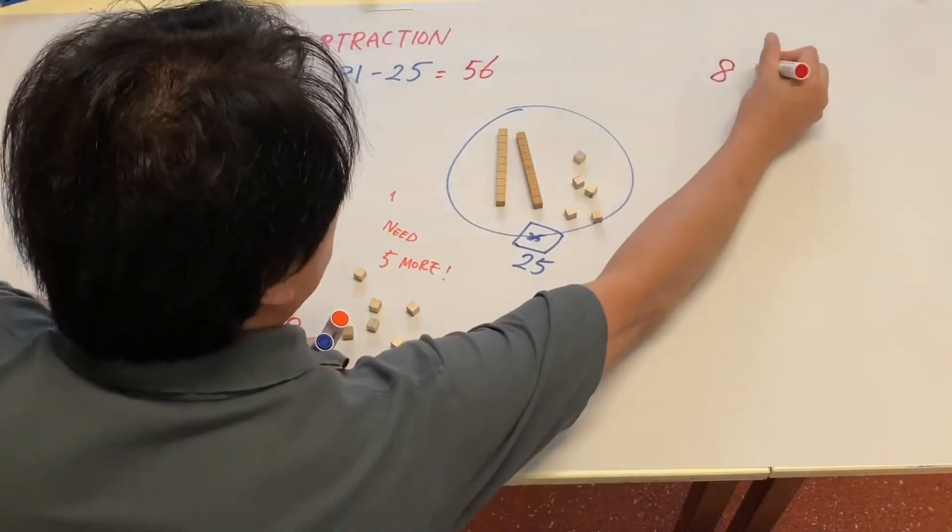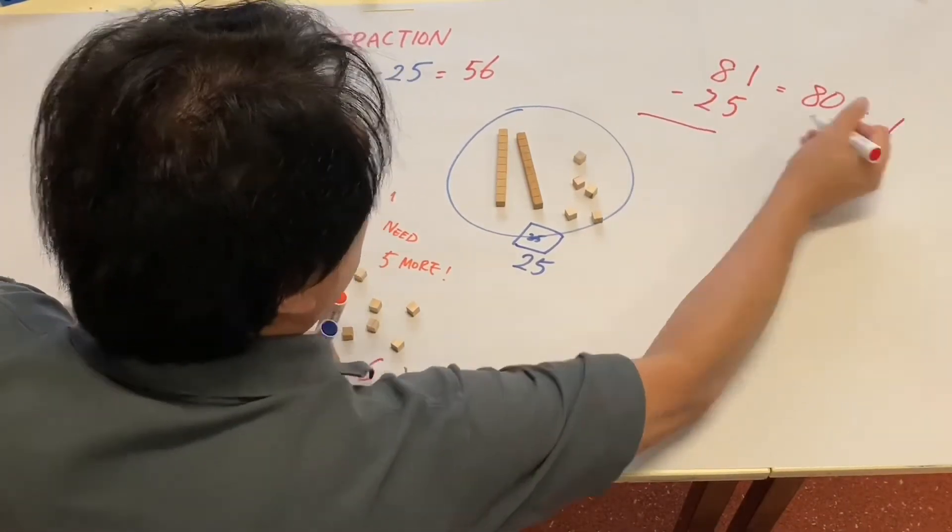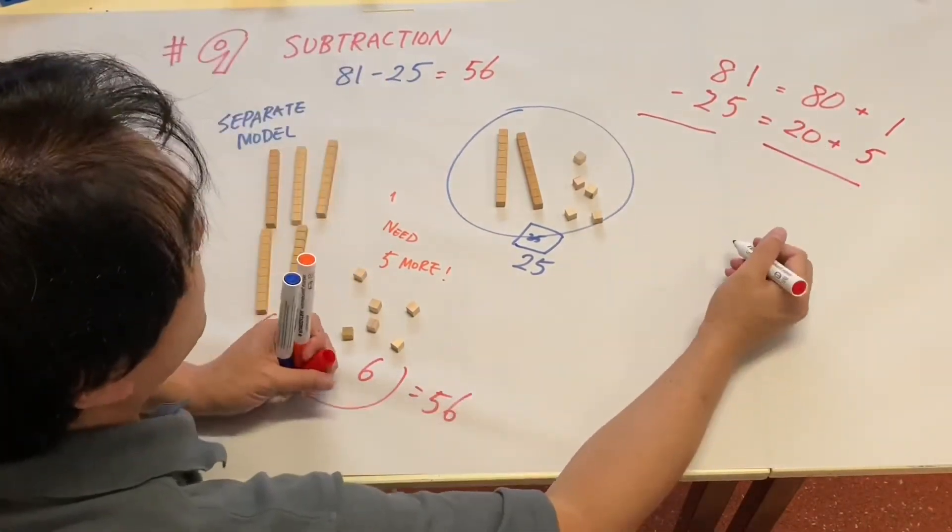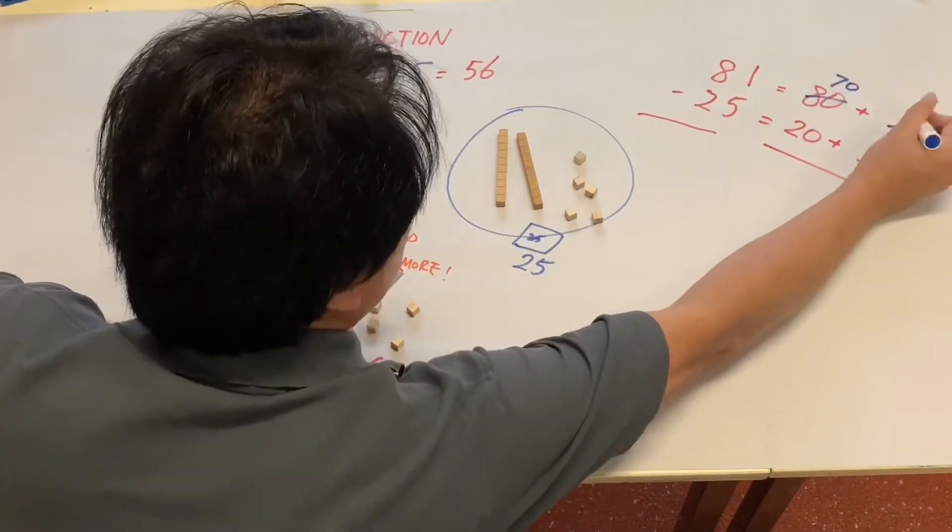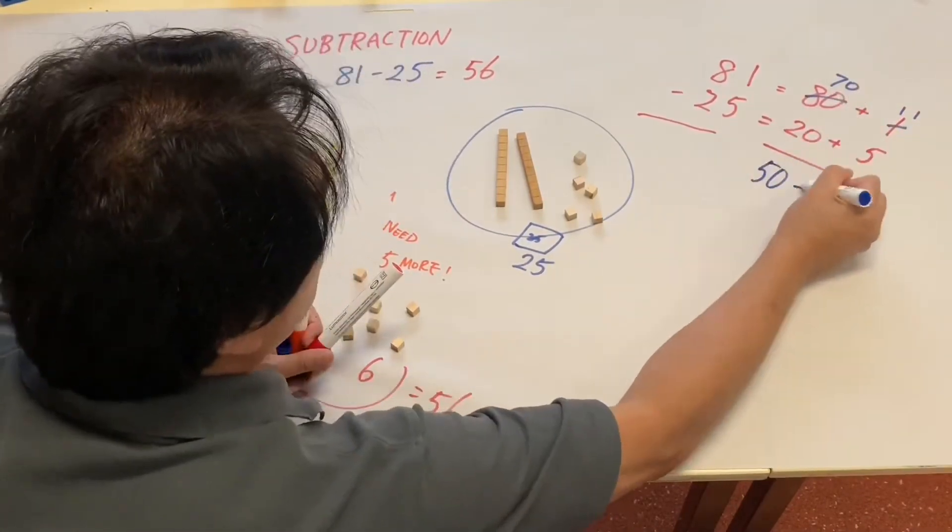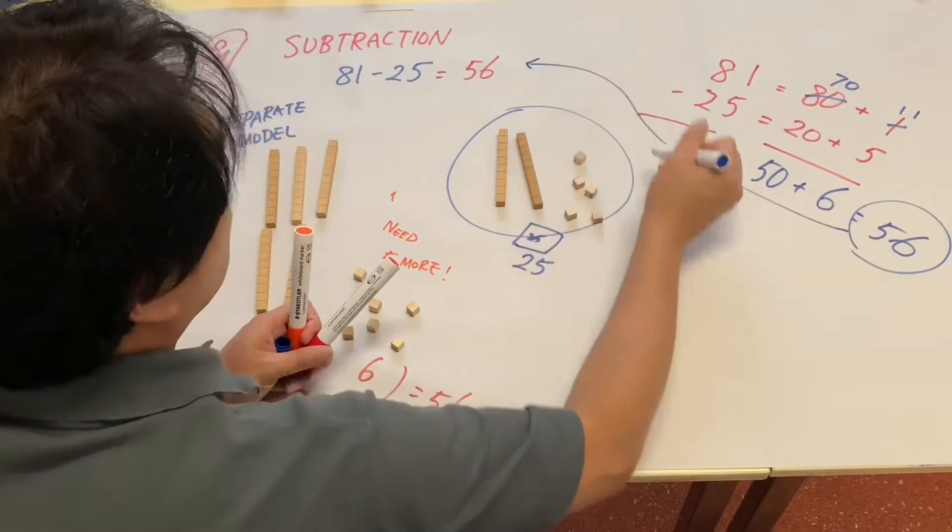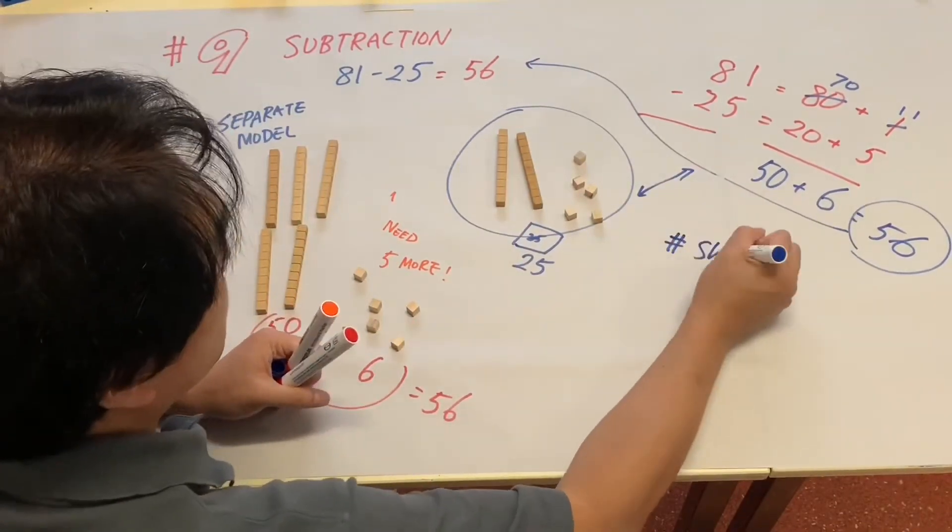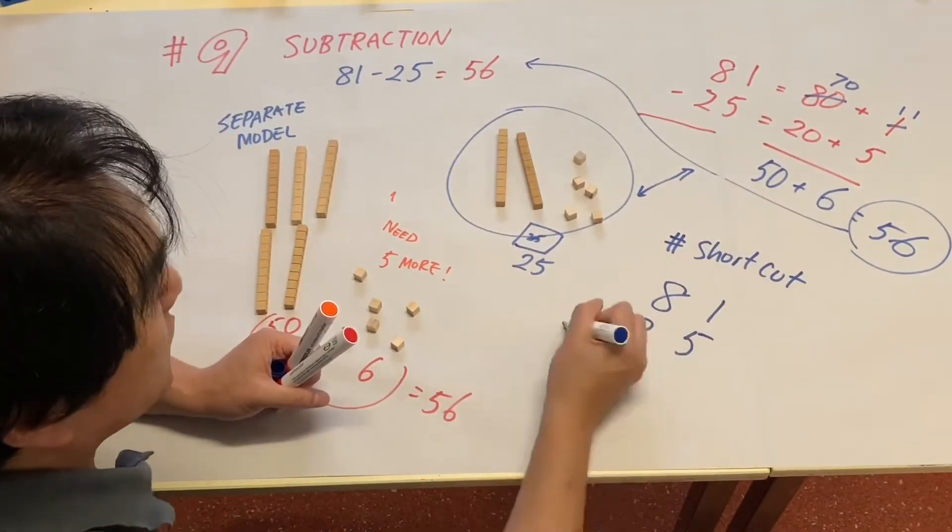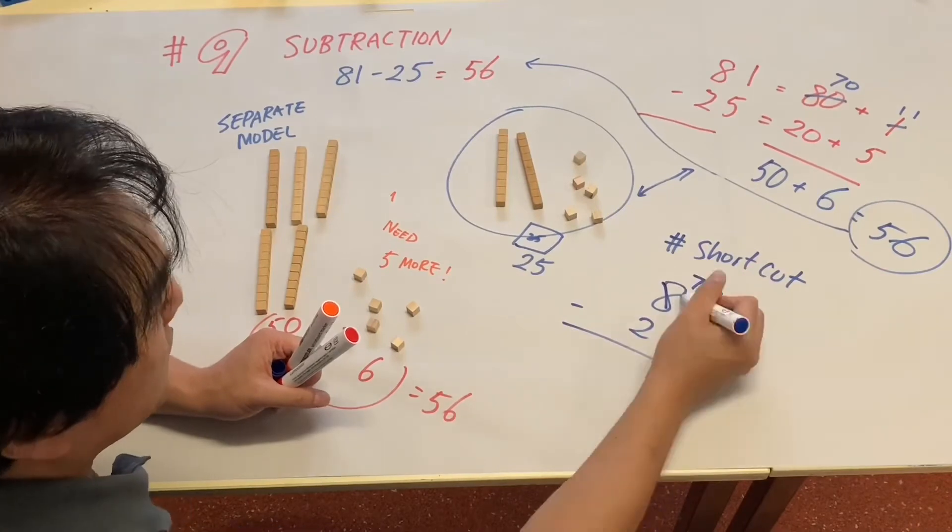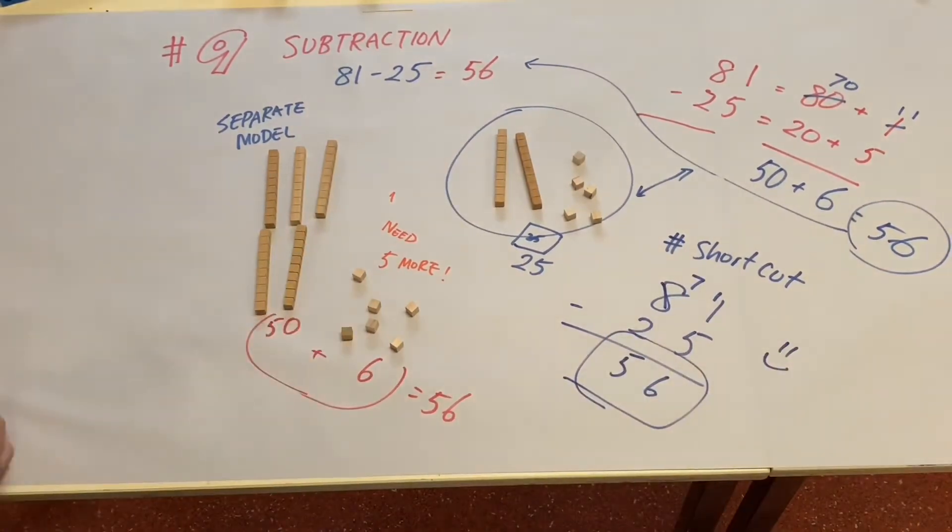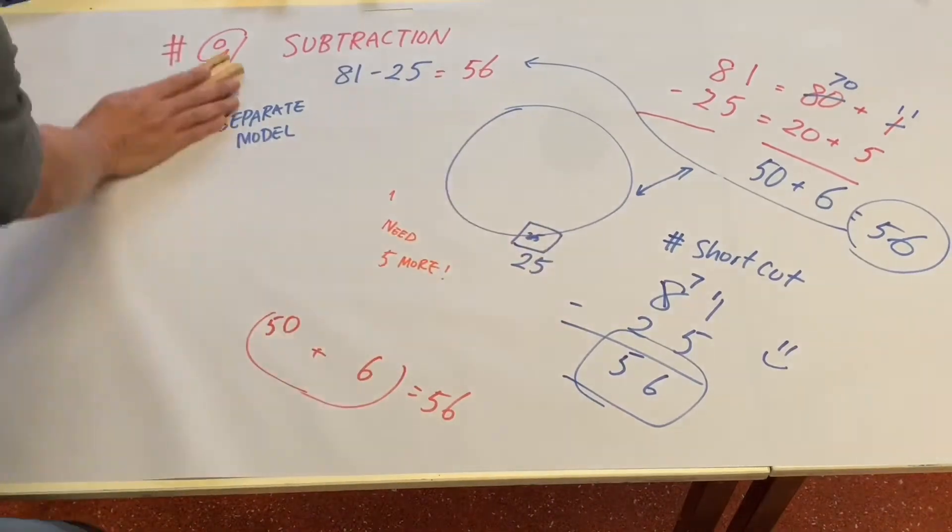The important part is the fair trade between the 1 ten and 10 ones. Let's see how it works with the partial model. So 81 is 80 plus 1, 25 is 20 plus 5. We cannot do it, so we're going to do a fair trade with 1 ten and 10 ones. Again, students may have a bit of frustration how inefficient this is, and they may start a shortcut.